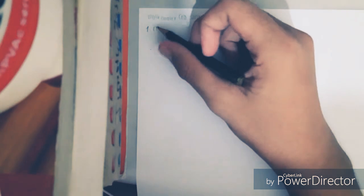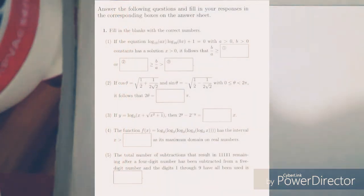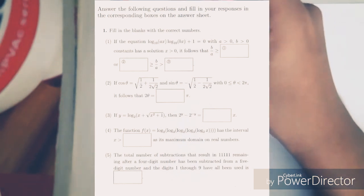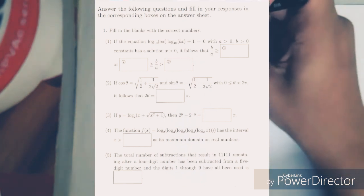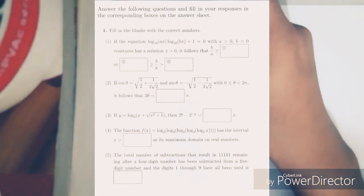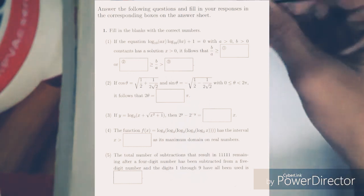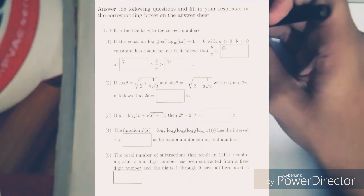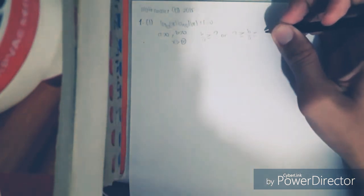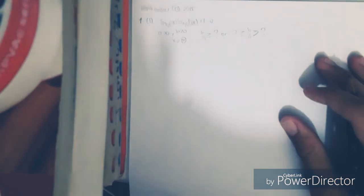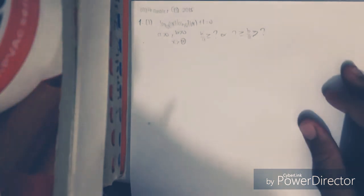In this part, we will discuss section one. You should have the resources, but I will show you that this is the original Mombuka Okokuso equation. Number one is a logarithm question: log₁₀(ax) multiplied by log₁₀(bx) plus 1 equals 0, where a > 0, b > 0, and the equation has a solution x > 0. The question asks: what is the range of b over a?